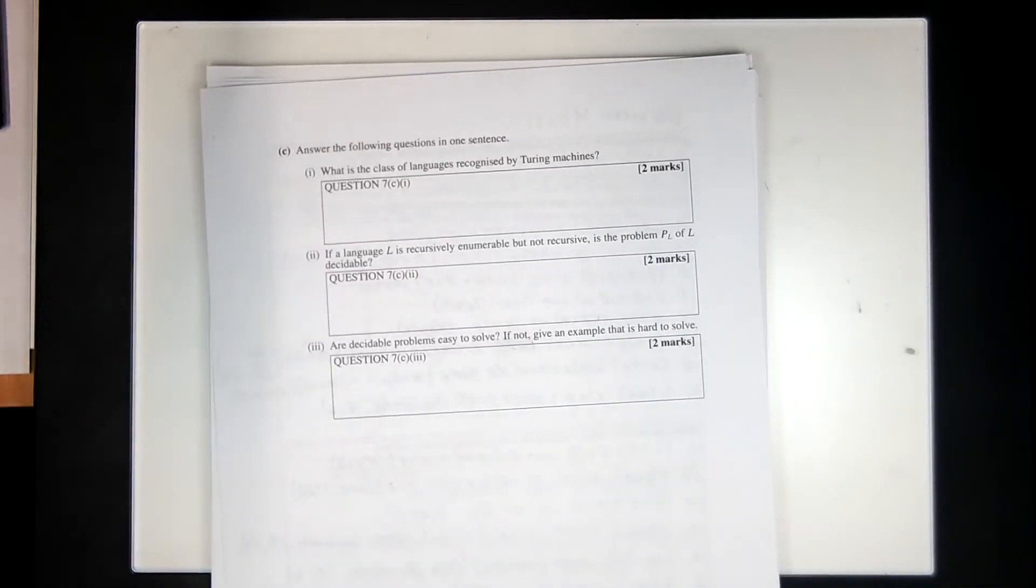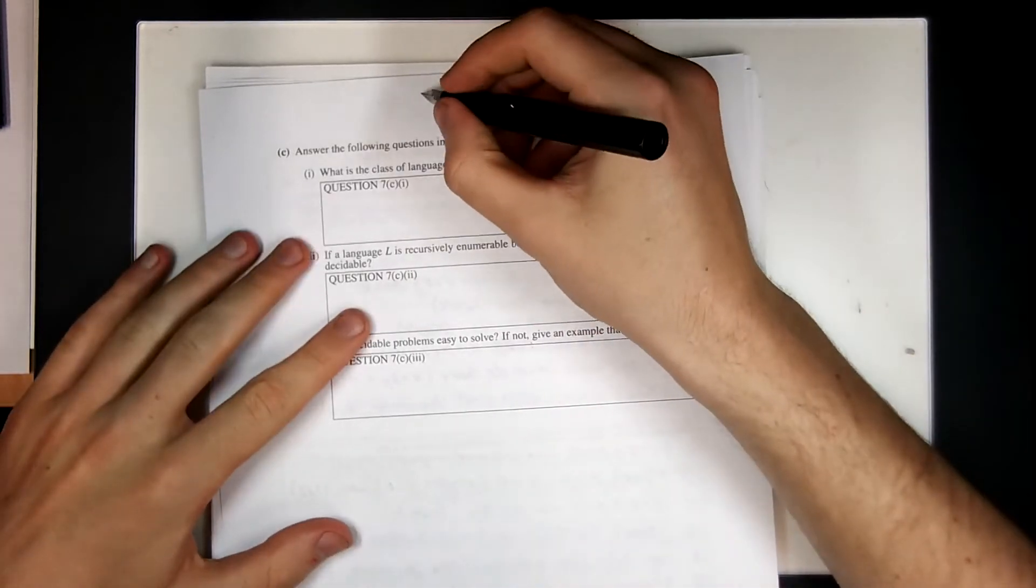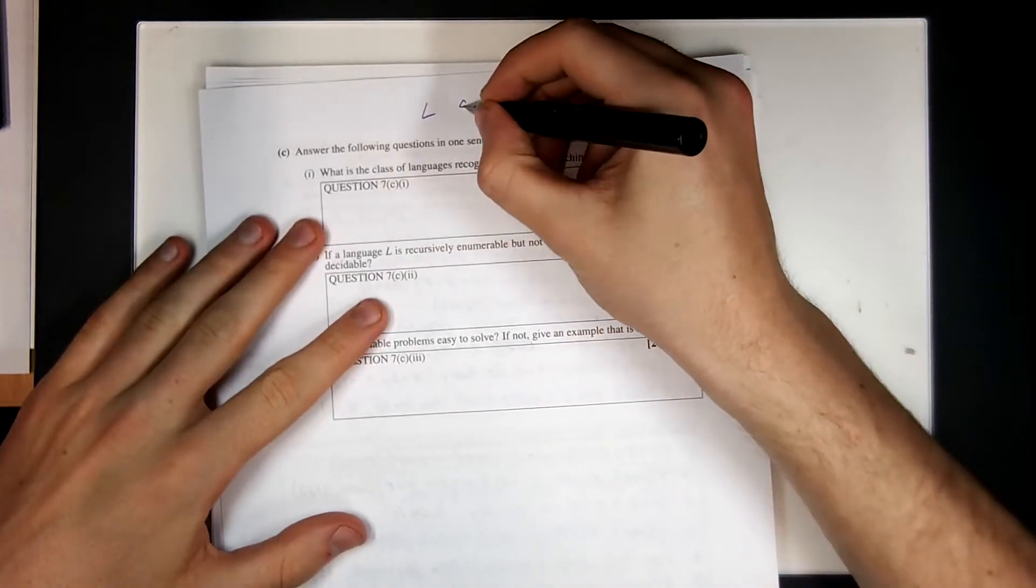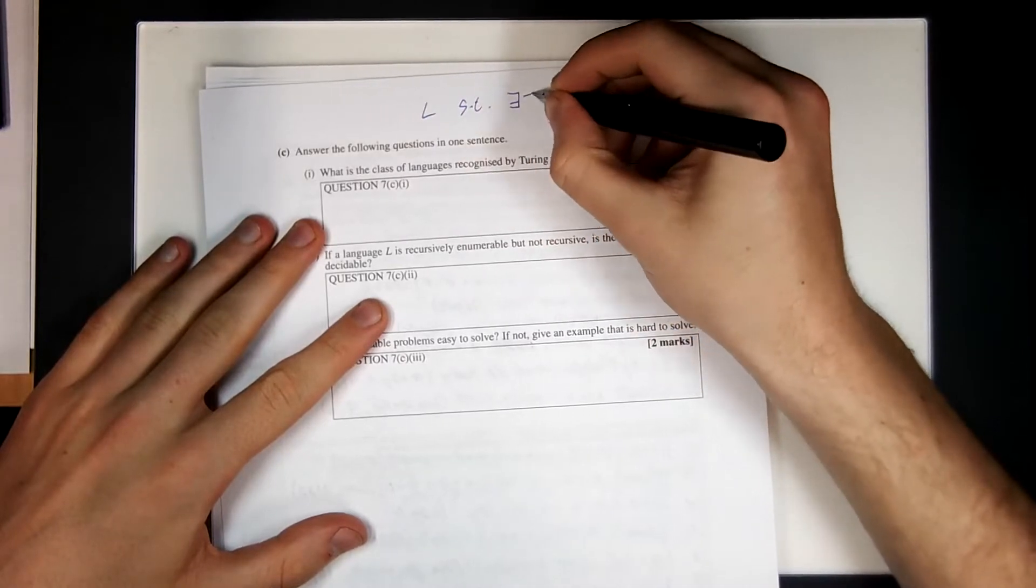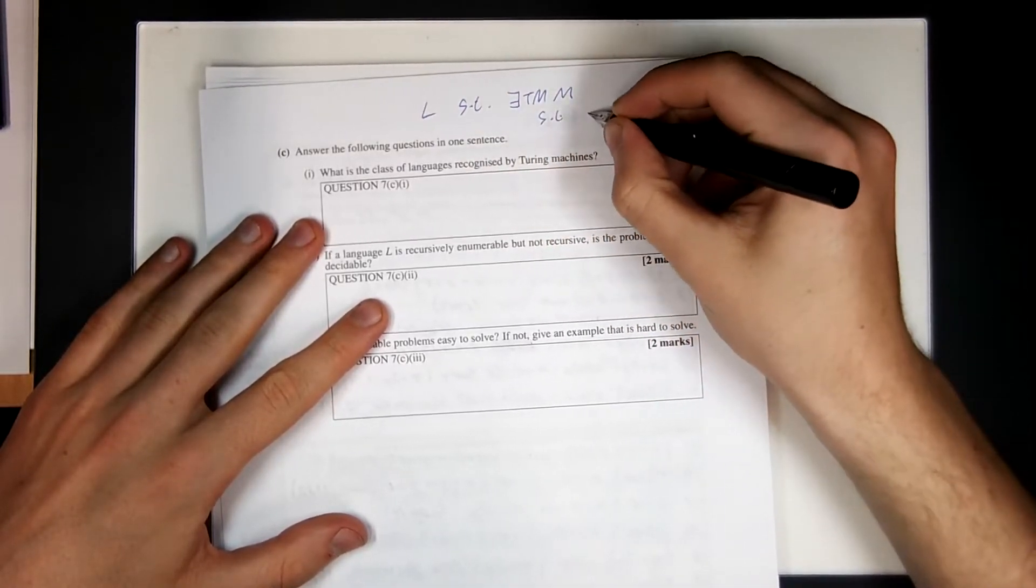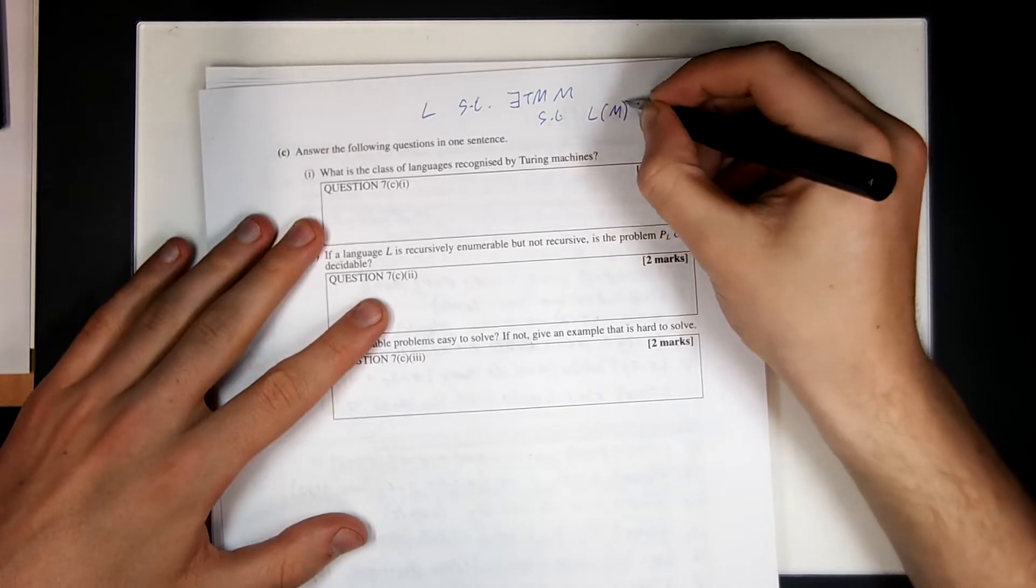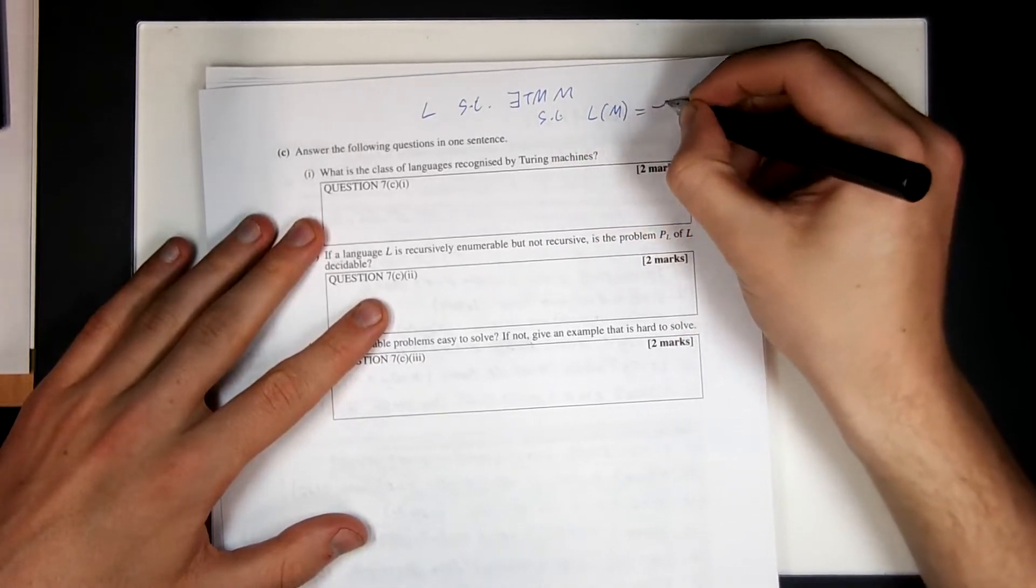What is the class of languages recognized by Turing machines? That is to say, what is the class of languages L such that there exists a Turing machine M such that L of M, i.e. the language M accepts, is fancy L?